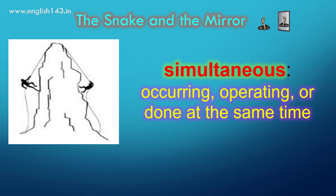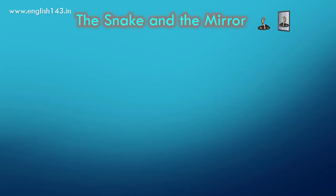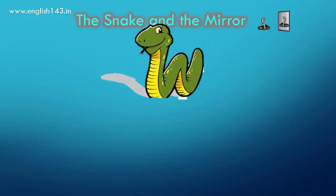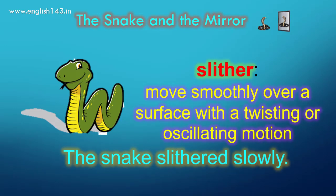Simultaneous means occurring, operating, or done at the same time. Their climbing of the mountain is simultaneous — that means both are climbing at the same time. Slither means to move smoothly over a surface with a twisting or oscillating motion. The snake slithered slowly.